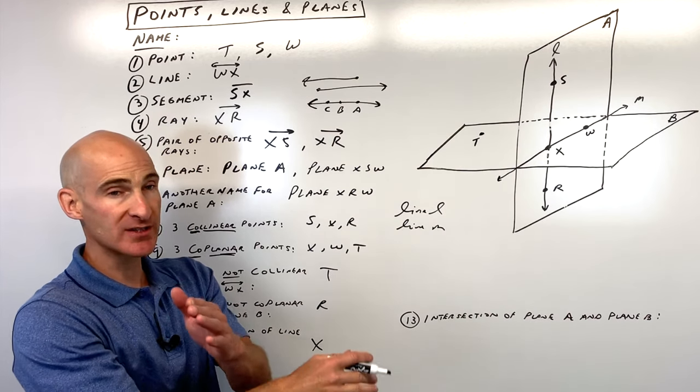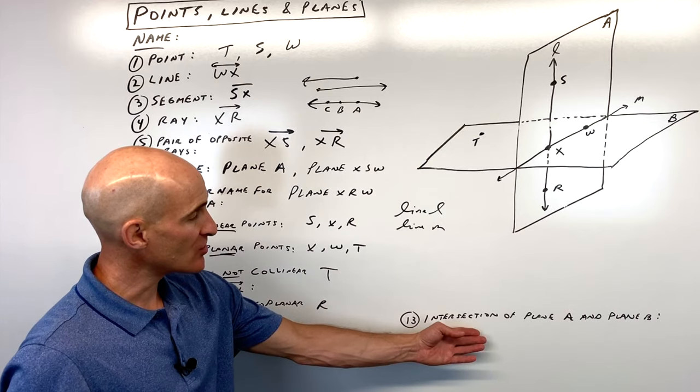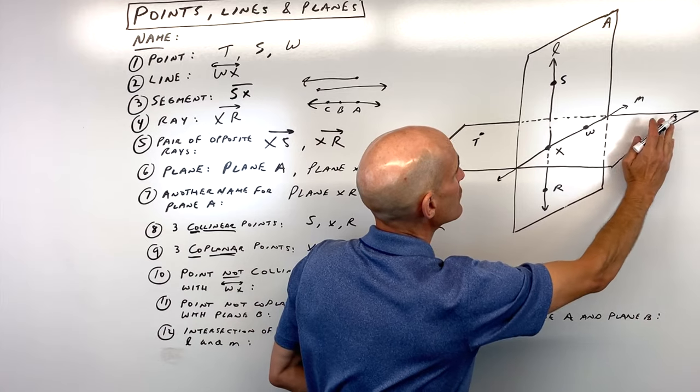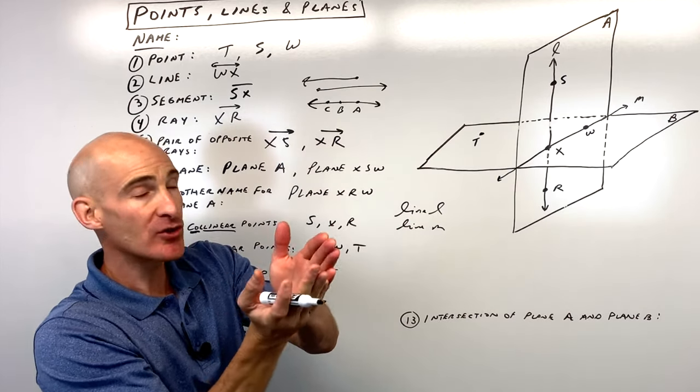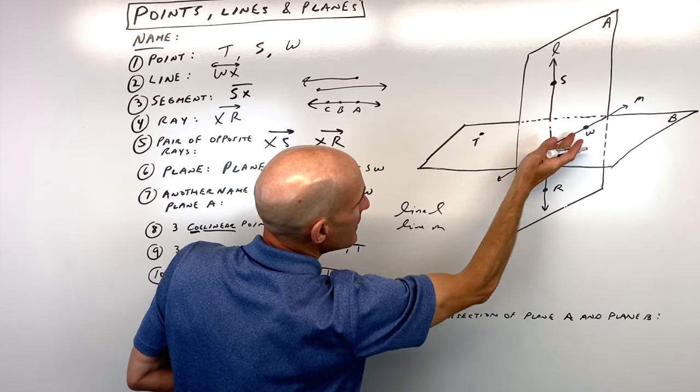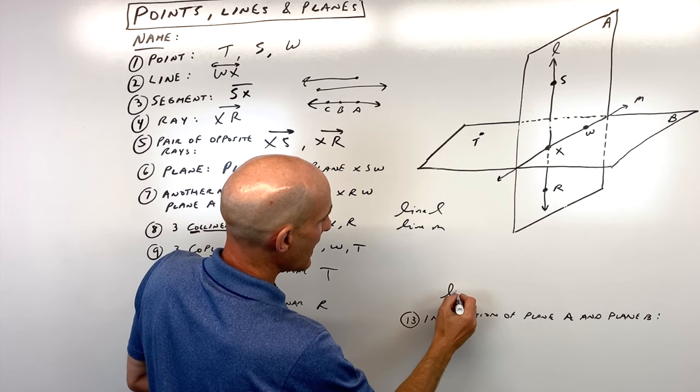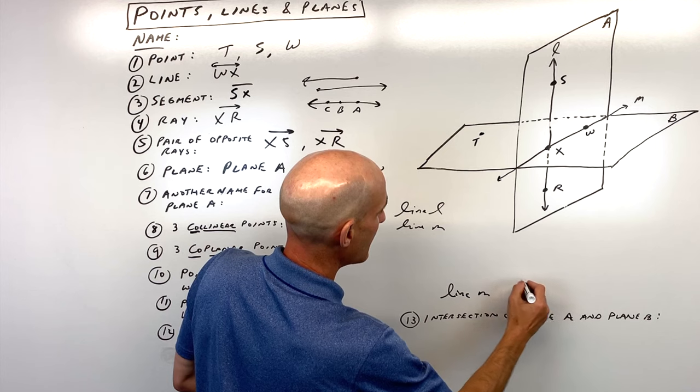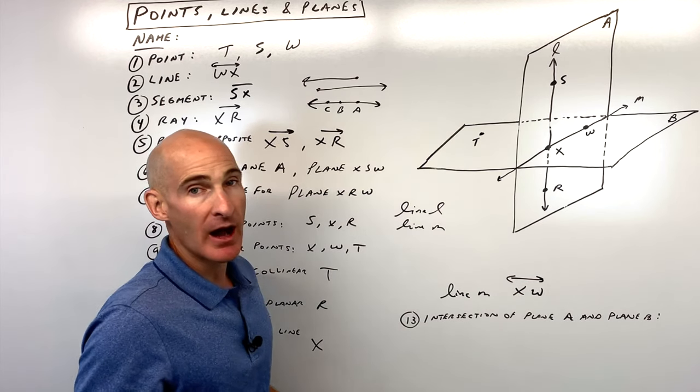Remember, two lines, when they cross, they cross at a point. And then what's an intersection of plane A and plane B? So this flat surface and this flat surface, where do they cross or intersect? You can see they're intersecting right at this line. We could say line M, or we could say line XW. Either of those would work.